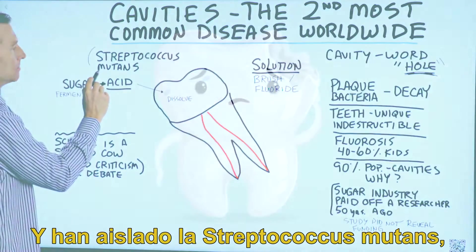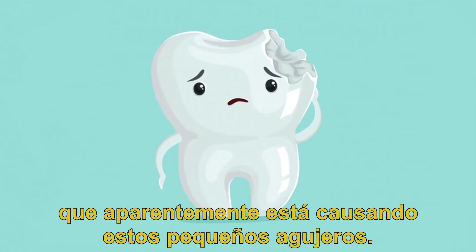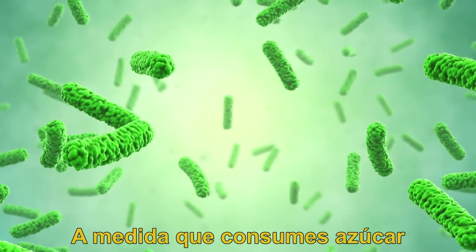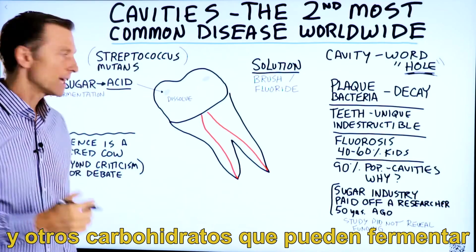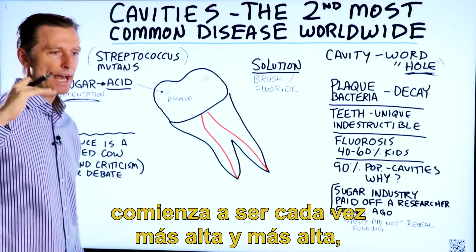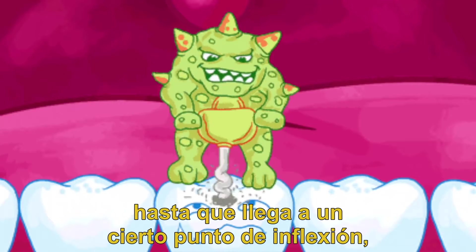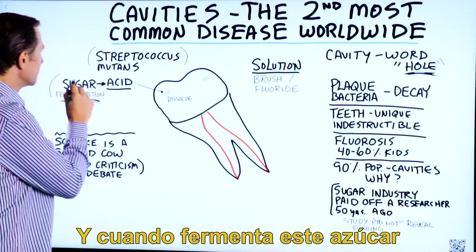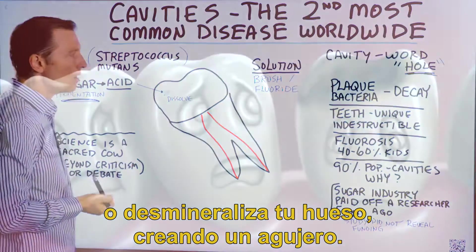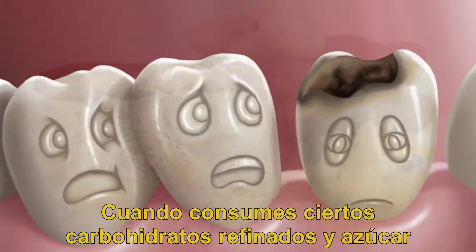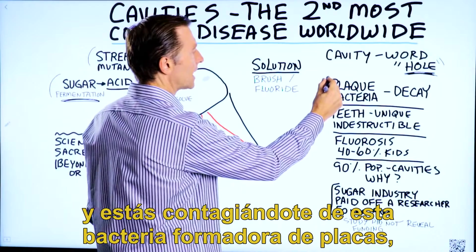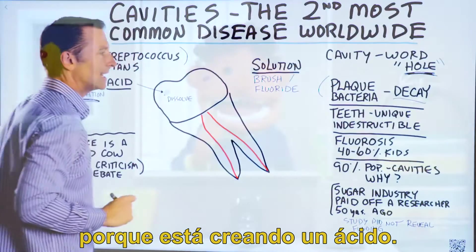They've isolated Streptococcus mutans as the main bacteria apparently causing these little holes. You have a lot of friendly bacteria living in your mouth, but as you consume sugar and other carbohydrates that can ferment, the population of this bacteria starts going higher and higher until it hits a tipping point where it's dominating. When it ferments sugar, it creates an acid which dissolves or demineralizes your bone, creating a hole. When you consume refined carbohydrates and sugar, you're feeding this microbe, producing plaque-forming bacteria that causes decay by creating acid.